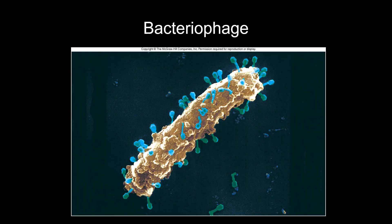Next, bacteriophage — or just phage for short. These are viruses that infect bacteria. They look like little alien docking ships under a microscope. They've got tails that help them stick to the bacteria and a head. All these little greeny-blue things on the surface of the cell are phages infecting this bacterial cell.